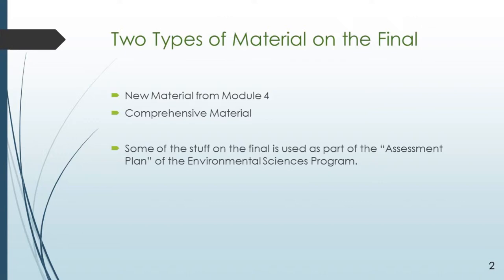We have to have some comprehensive material. It has to do with the 500-level status of the course, and it also has to do with the fact that some of the stuff on the final is used as part of the assessment plan of the environmental sciences program. There are some cumulative-type questions that we'll talk about towards the end of this lecture. But the short version of the story is there's not a ton of comprehensive stuff on the final. It's mostly about new material from the fourth module of the course.